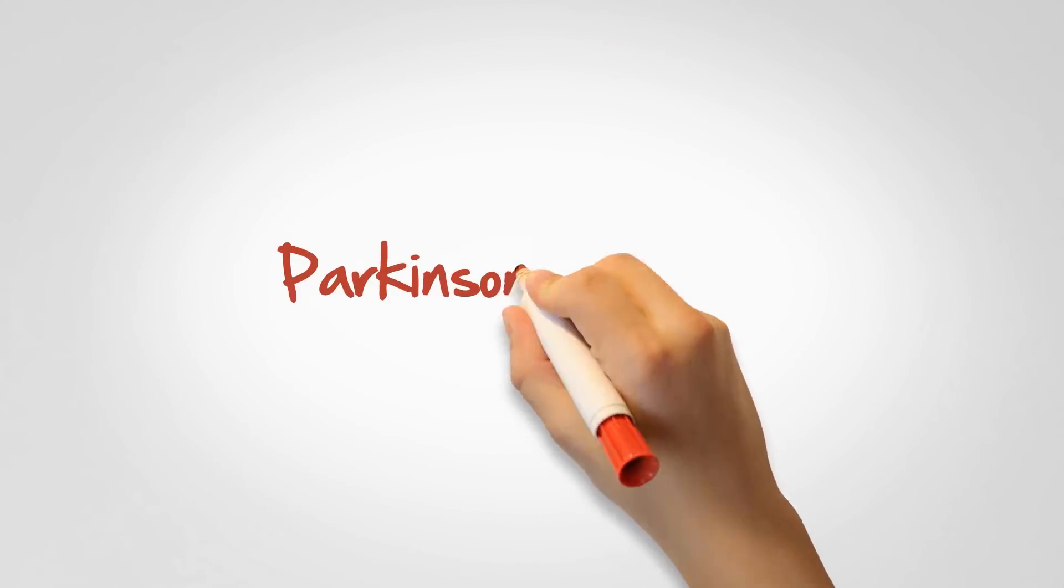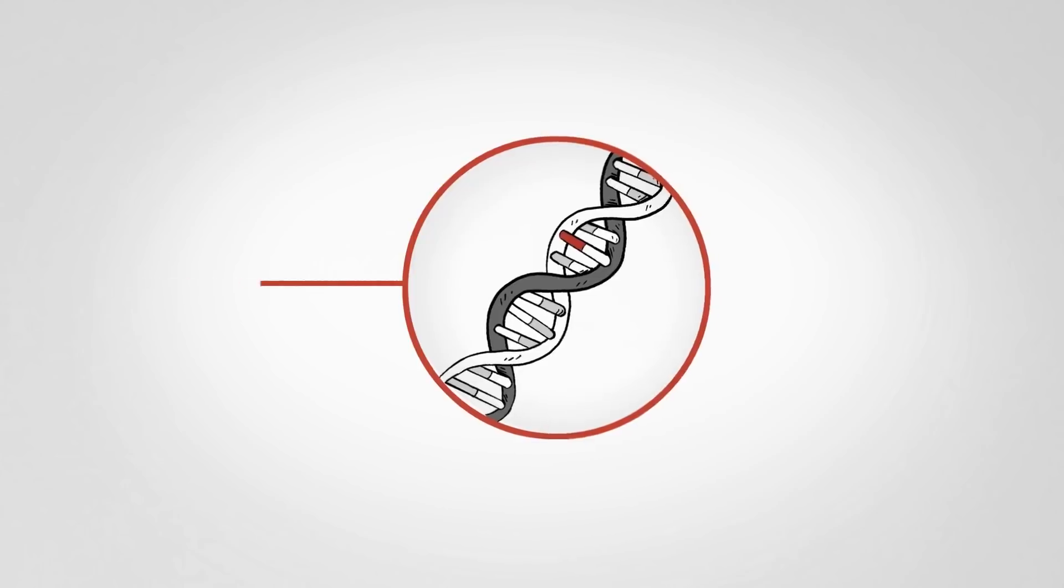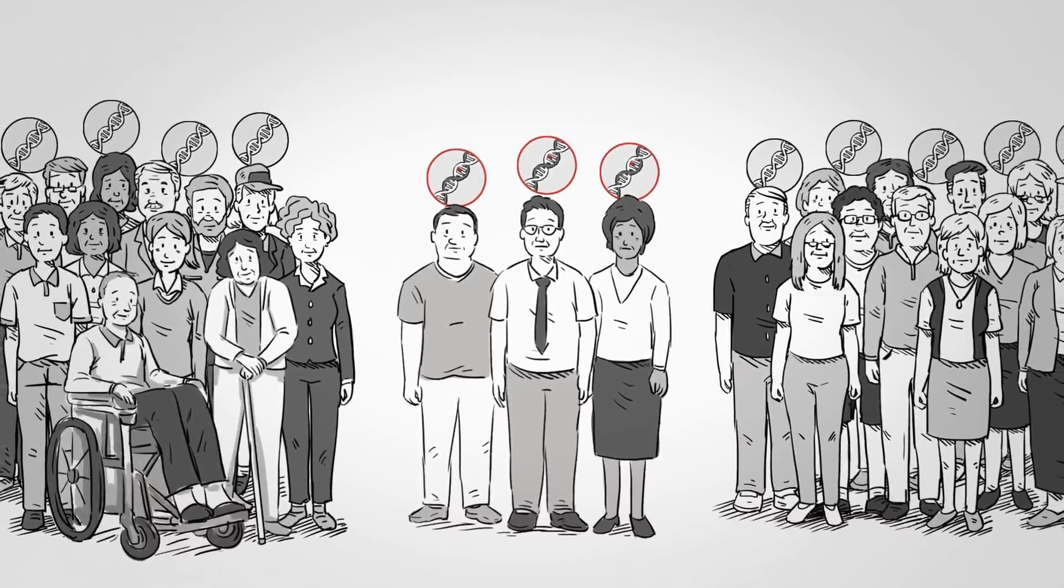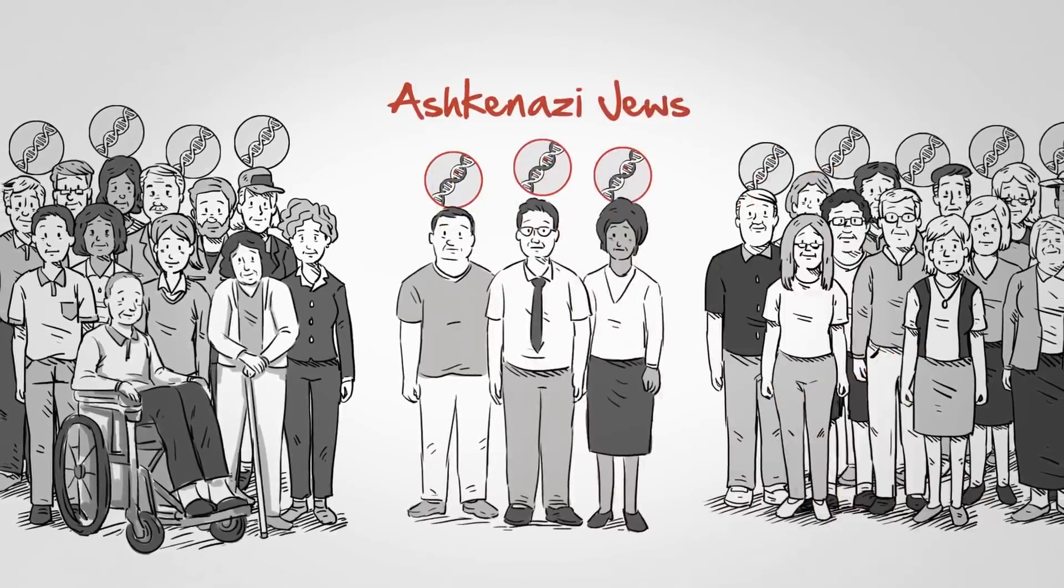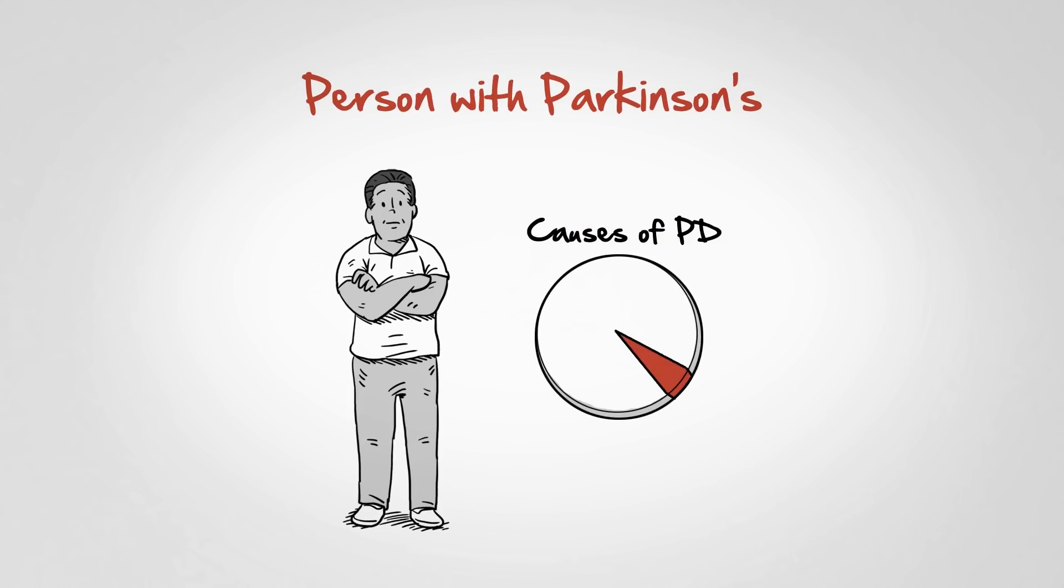In most cases, however, having a mutation does not necessarily mean you will develop Parkinson's. Also, these genetic mutations are pretty rare, with exceptions in certain groups like Ashkenazi Jews. In fact, if you do have Parkinson's, the odds are low that it was caused by a known genetic mutation.